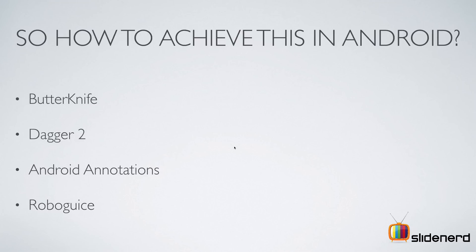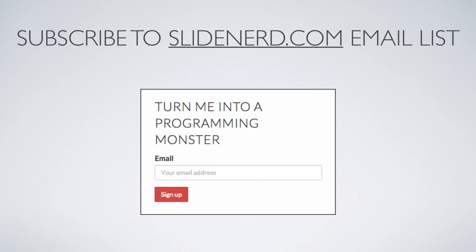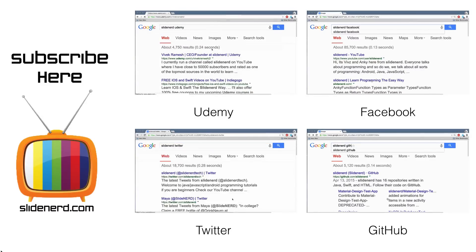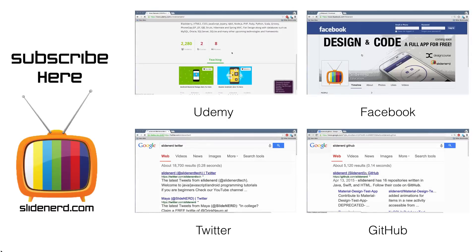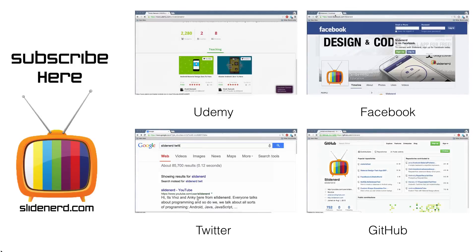I haven't given you an example of how the cocktail and BarDatabase would look with actual dependency injection, because it changes with the type of library used. Also, DI is not just specific to Android — it works with AngularJS, PHP, JavaScript, and other languages that have libraries and objects. In upcoming videos on SlideNerd I'll be covering these libraries for Android. Subscribe to our email list on SlideNerd.com, find us on Udemy, Twitter, Facebook, and GitHub. If you liked this video, please like, share, and subscribe. Thanks for watching — catch you in the next video!